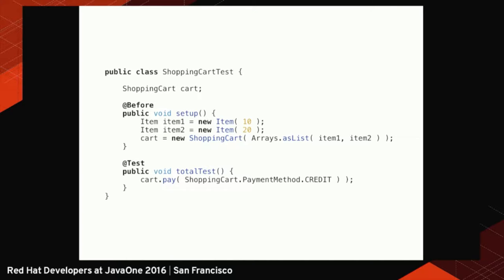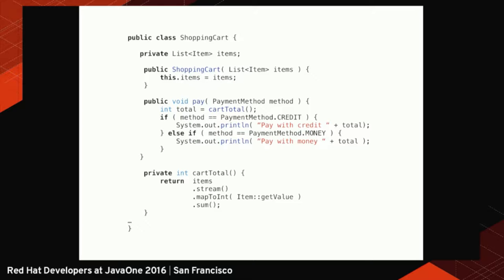I add item one and item two to my shopping cart, and I have to select the algorithm for the payment — whether it's credit or debit. I'm passing that as a parameter for the pay method. But the code starts to look weird because I have two types of payments, credit and money, and I have to handle everything with if/else if chains. It looks fine for now, but the issue starts when I have to add more payment types.